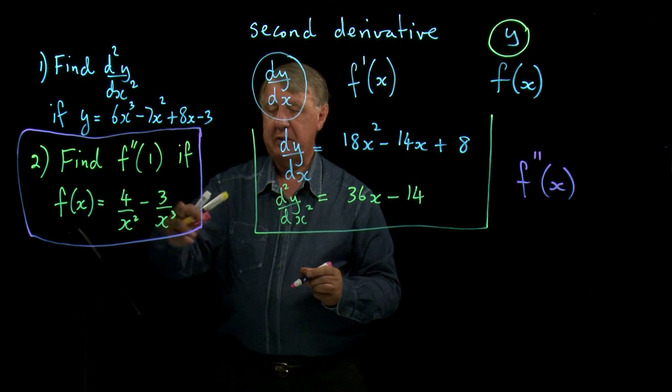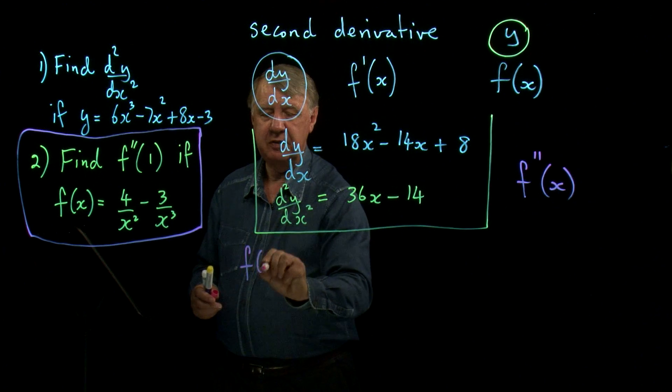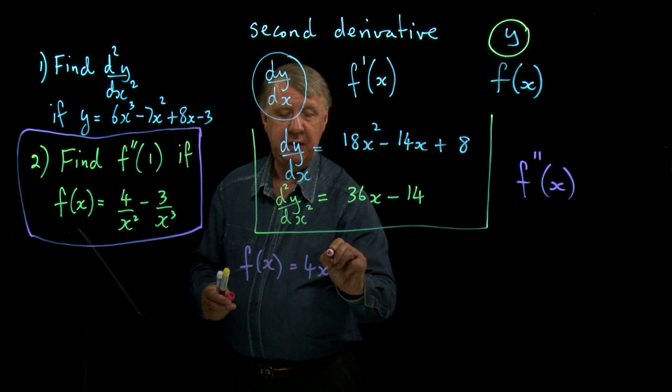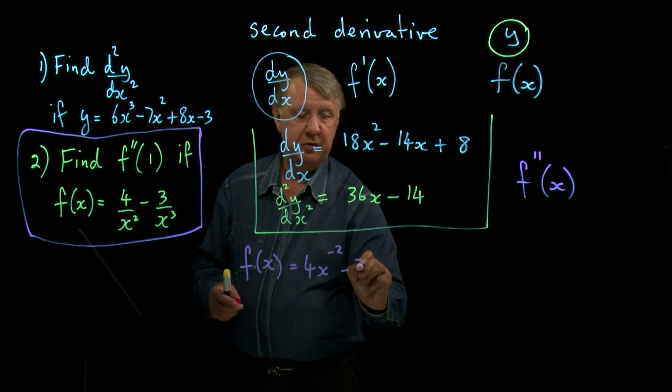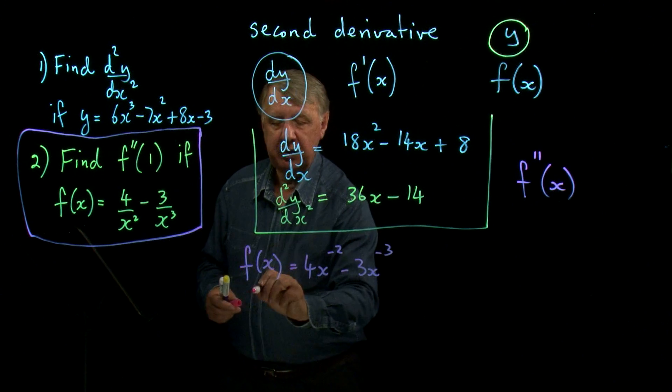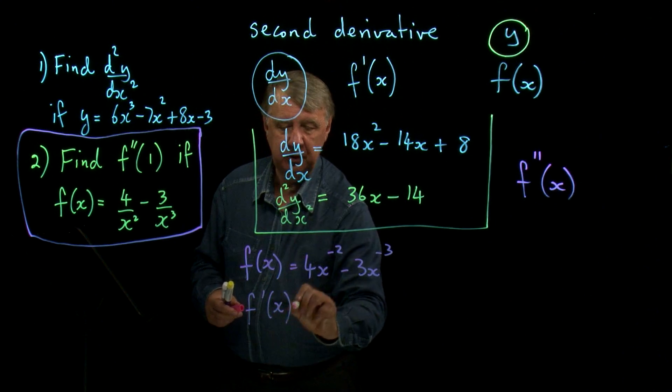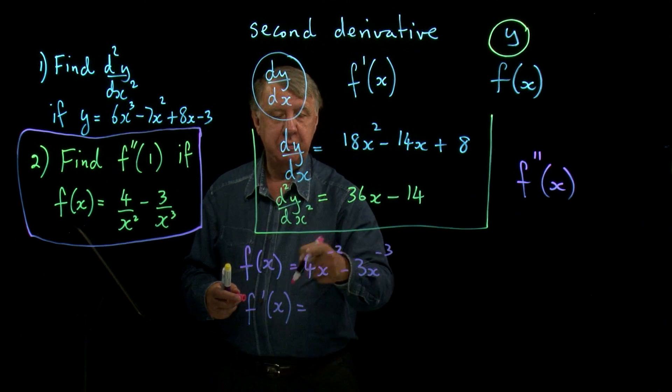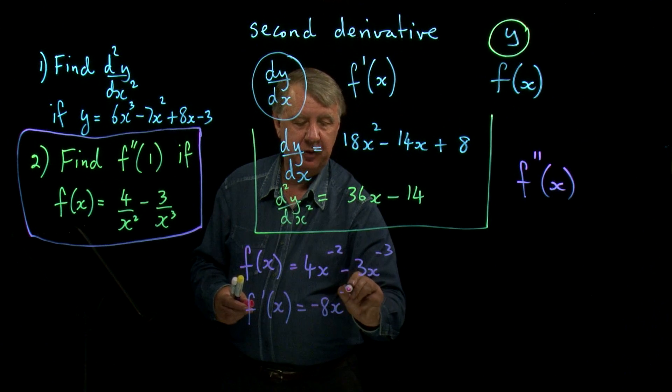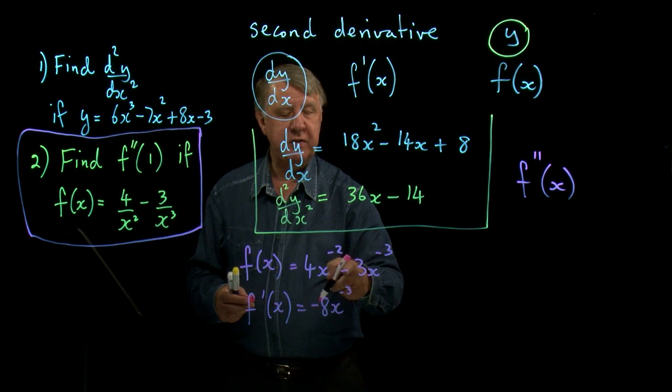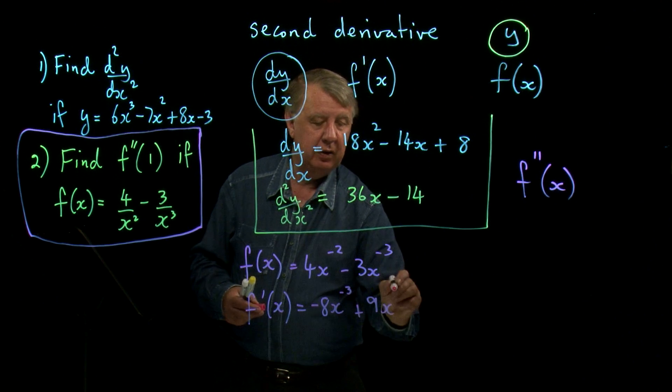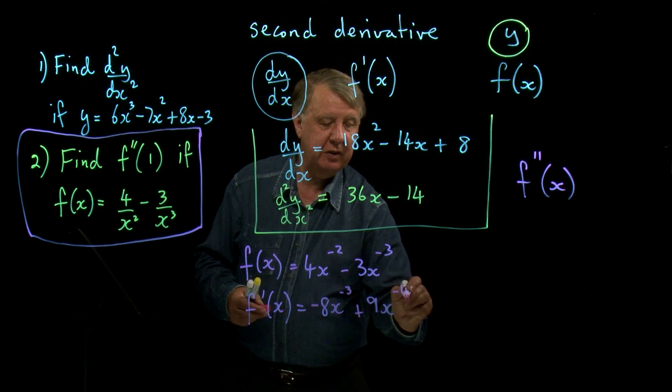So if I start with f of x equals this, I have to write this in the best possible way. So that's 2x to the negative 2 minus 3x to the negative 3. So I differentiate once, f dashed x. And that gives me negative 8x to the negative 3. Negative 3 times negative 3 is positive 9, and take away 1 from that is negative 4.